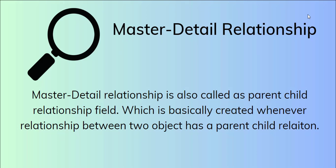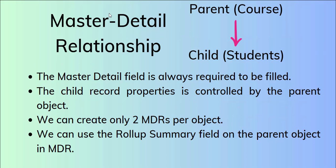The Master-Detail Relationship is also called a parent-child relationship, which is created whenever the relationship between two objects has a parent and child relation. We can create this relationship when we want to access the parent record from the child object. The master is the parent and the detail is the child side.